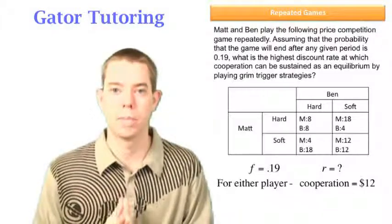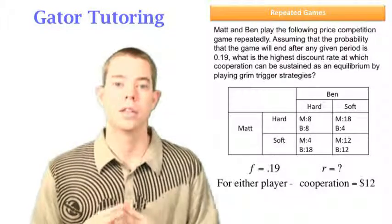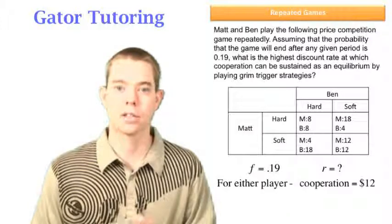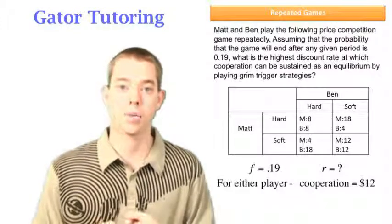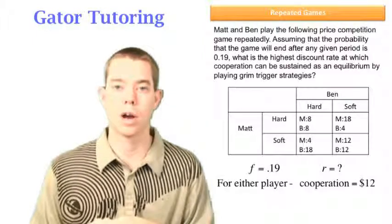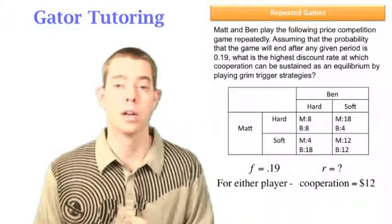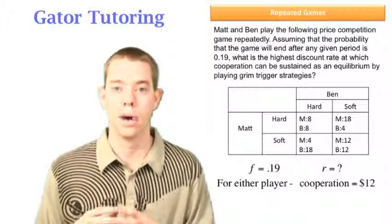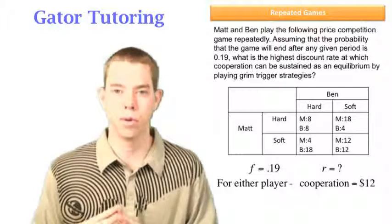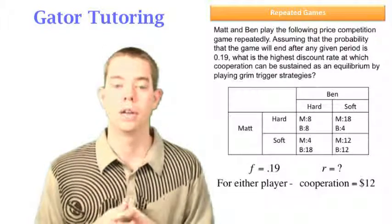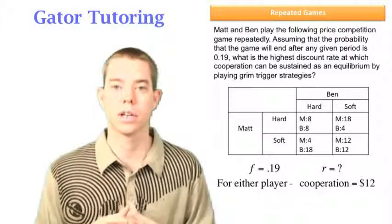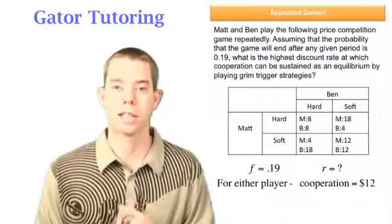But the better way to remember it is look at the box where aggregate industry profit is highest. So total industry profit, which is Matt's profit added to Ben's profit is highest. That bottom right box, we see 12 plus 12 is 24. That's the highest amount of profit combined. The top right box is 18 plus four, that's only 22. And eight plus eight is 16. So that's the correct way to look at it when aggregate industry profit is the highest, that's when they're cooperating.